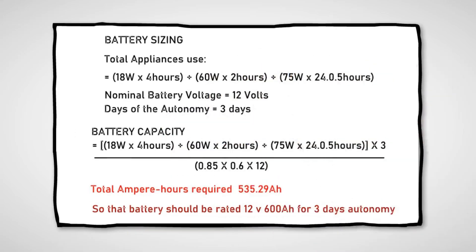This is the computation for battery sizing. Calculate the total watt-hours per day used by appliances, and divide the total watt-hours per day by 0.85 for battery loss. Then divide your answer by 0.6 for depth of discharge. Divide again by the nominal battery voltage. Finally, multiply your answer by the days of autonomy — the number of days you need the system to operate when there is no power produced by PV panels. This gives you the required ampere-hour capacity of the deep cycle battery.